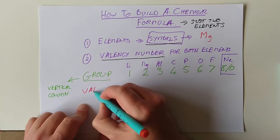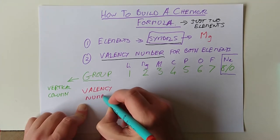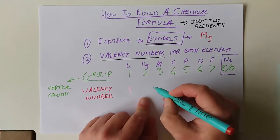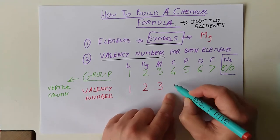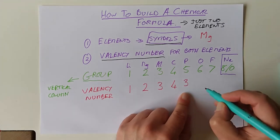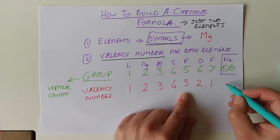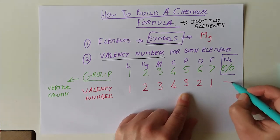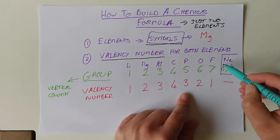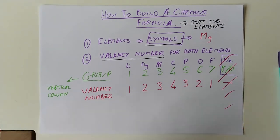So, there's the group numbers. Let's put an example of a typical element in each group. So, lithium, magnesium, aluminium, group 4 carbon, group 5 phosphorus, group 6 oxygen, group 7 fluorine, and group 8 neon. Although, group 8s are not going to be playing today. They're not joining the party.